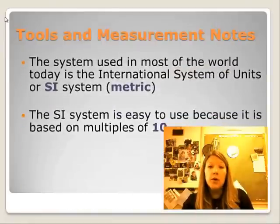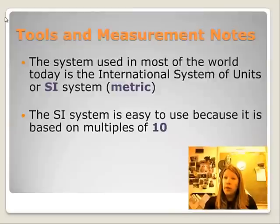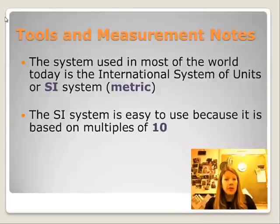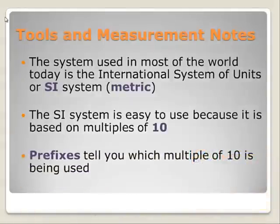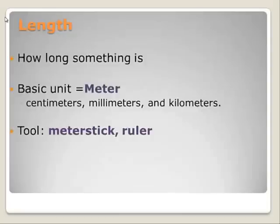The system used in most of the world today is the International System of Units or SI system, which is based on the metric system. The SI system is easy to use because it's based on multiples of 10. We don't use that here in the US - we call our unit of measure a customary system - but in science class, the scientific community uses the metric system. In the metric system, prefixes tell you which multiple of 10 is being used.